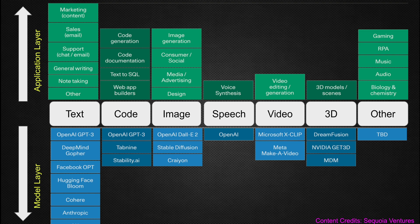The application layer is filled with so many use cases. These use cases are currently limited to the text, code, and image segments, with a few in video and 3D. However, a new category to apply these models includes gaming, RPA, creating music, audio, biology, and chemistry — the sky could be the limit. New research and new models are going to be coming in the next few months to a year's time frame, and you are going to see the application layer filled as we progress.